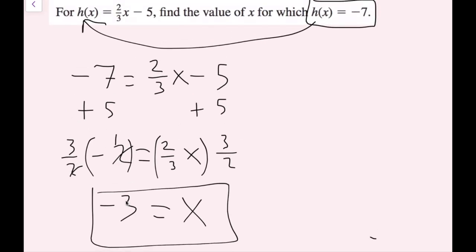Let's go back up here. This is the value of x, negative 3, that makes h of x equal negative 7. So one thing you could write, you don't have to, but you could write h of negative 3 equals negative 7. And now we're done with this one.